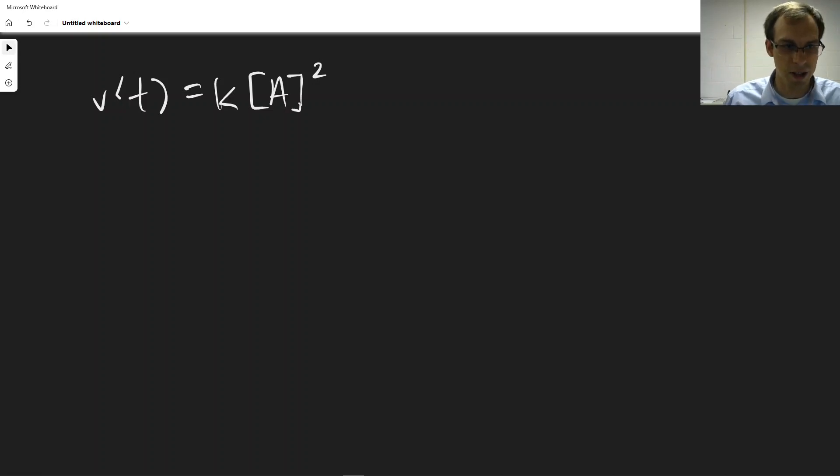Another way you can have a second order reaction is that your rate law can depend on multiple reactants, but each being first order. So you can have k times the concentration of A times the concentration of B.